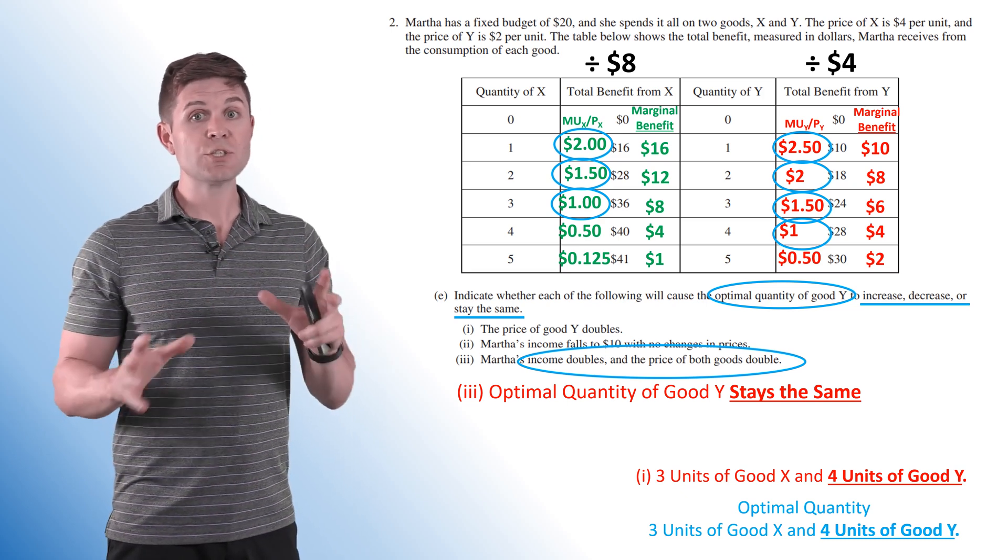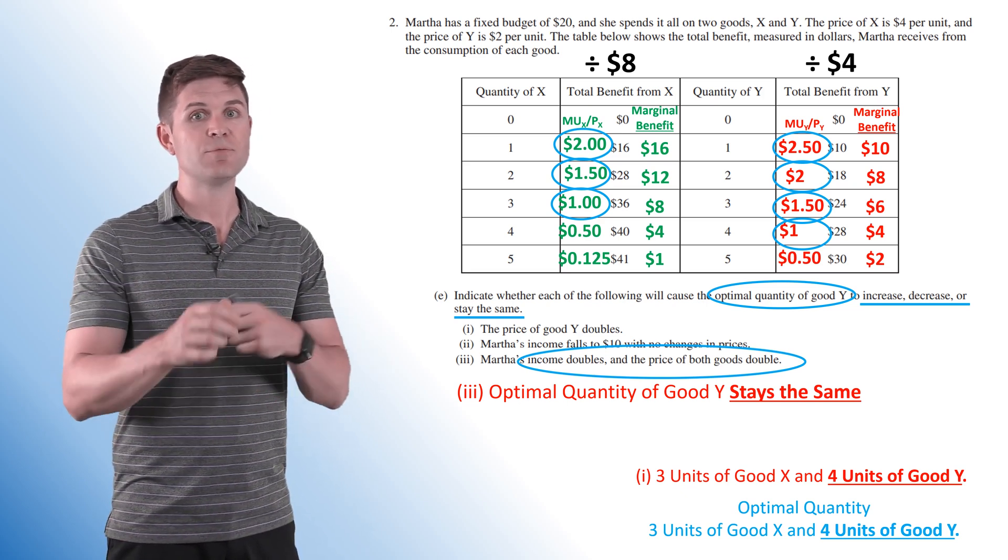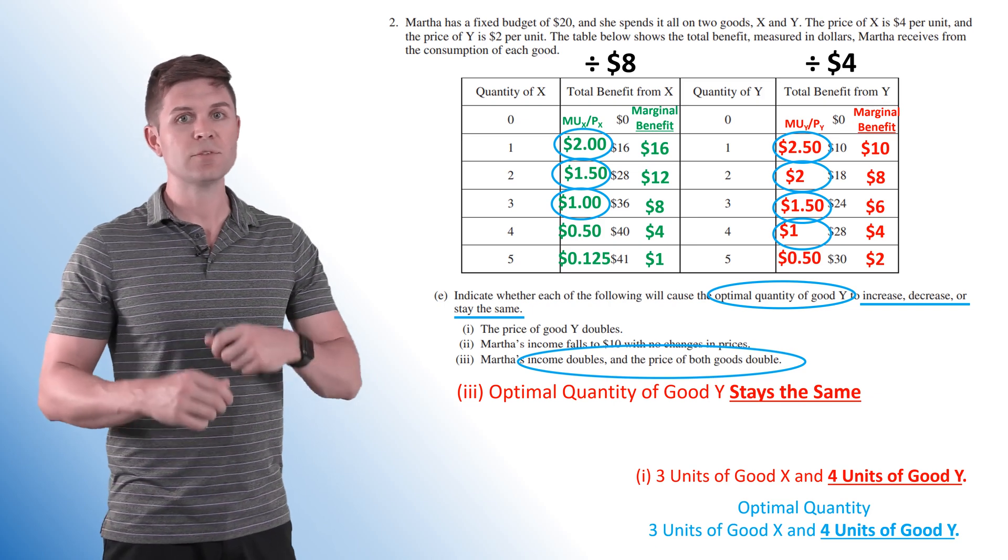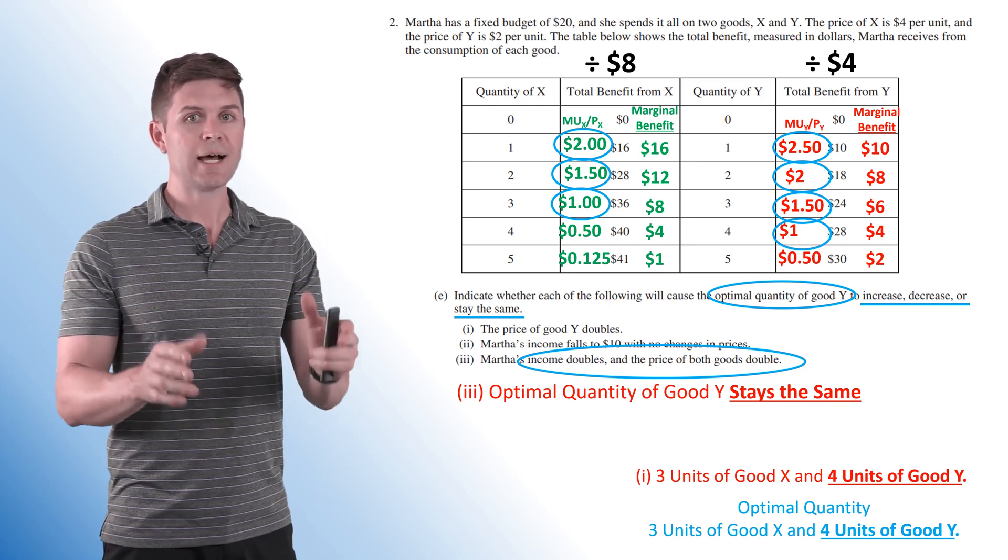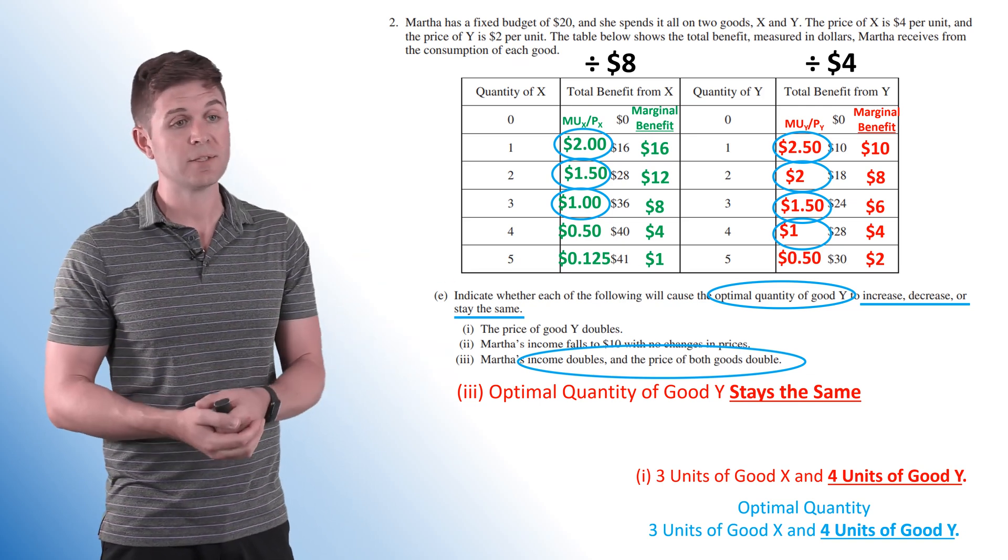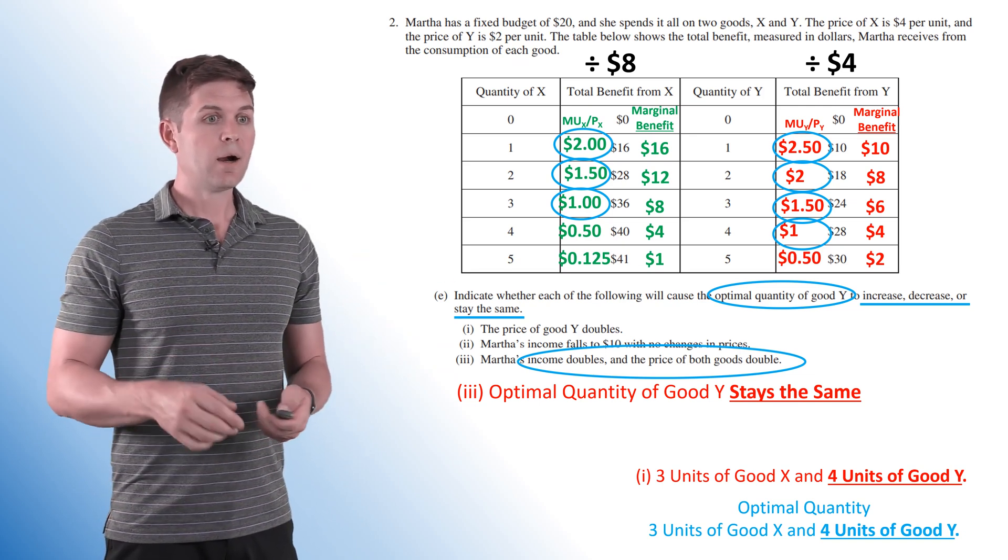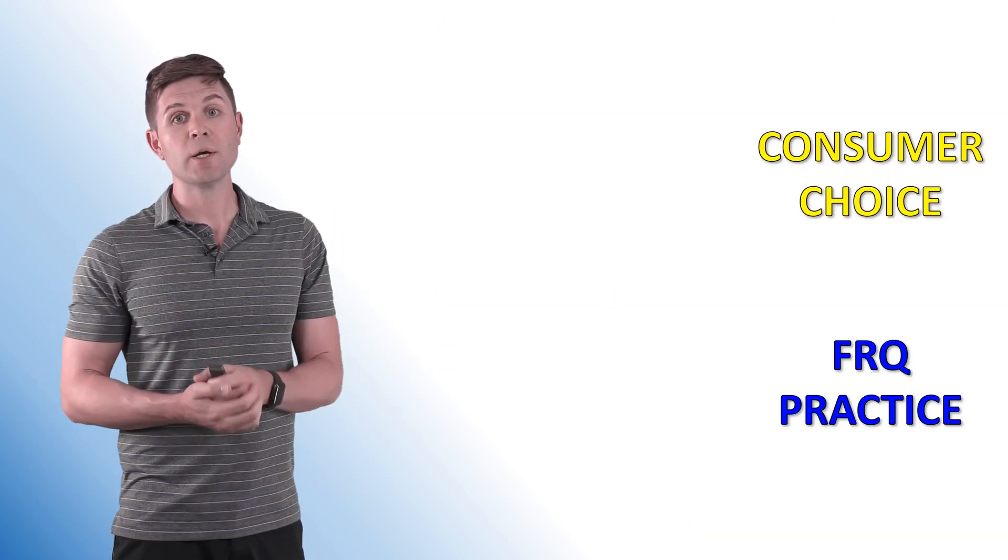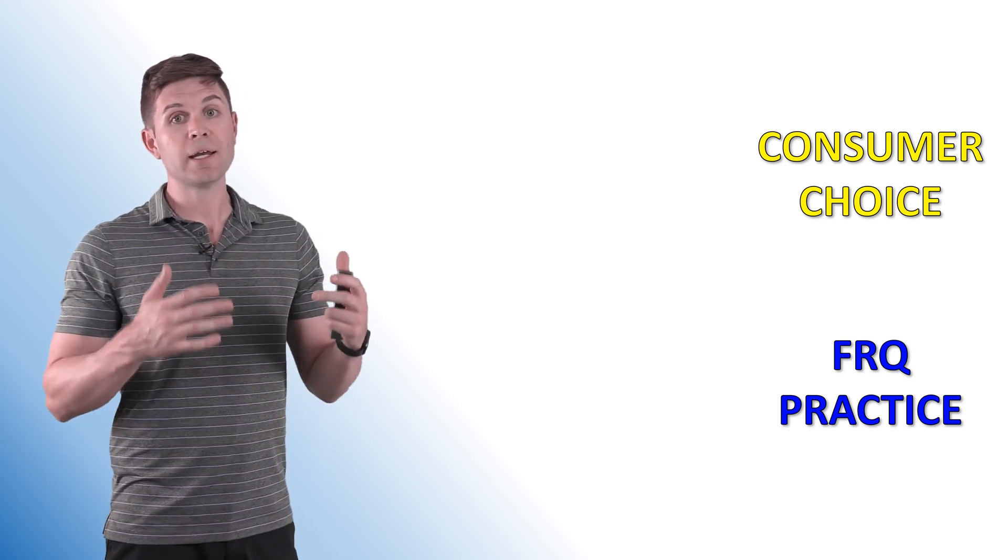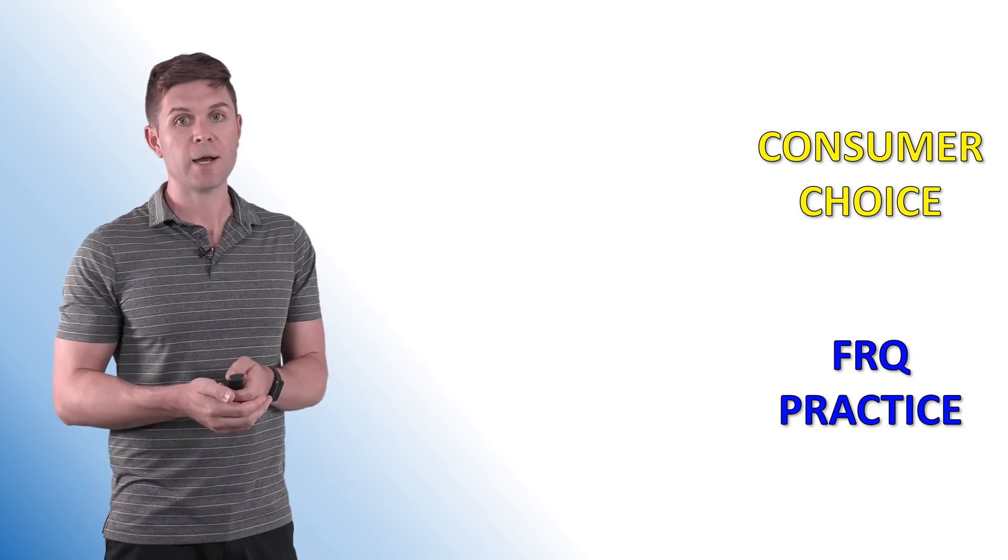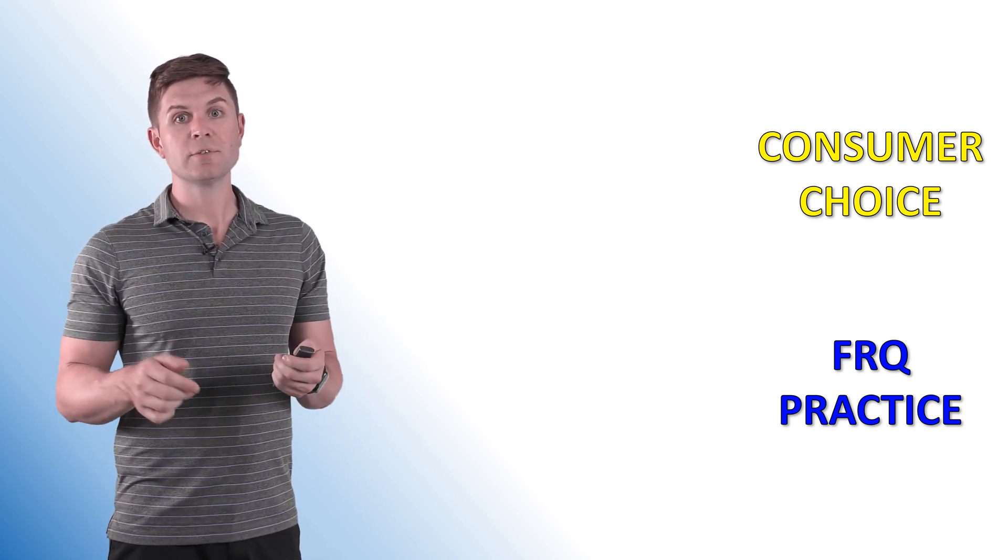Seven points. Now, the only issues with these questions is if you have too much written all over the place or you get confused on where you're at. So make sure you keep your work neat on this. Use all the pages. They give you plenty of pages on the AP exam. All right, guys, that's it. I hope you enjoyed that. If you had any problems with consumer choice, make sure you take a look at my consumer choice video. And as always, take a look at my other FRQ practices. All right, guys, thanks for watching. Take care.